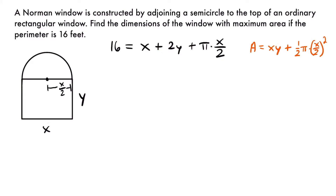Now that we have both equations, we want to use our constraint to rewrite our primary equation in terms of one variable so we can take the derivative of it. Currently the area equation is in two variables, x and y. Since there's only one y but two x terms, it will be easier to replace y in terms of x. We'll solve for y in our constraint and substitute it into the area equation.